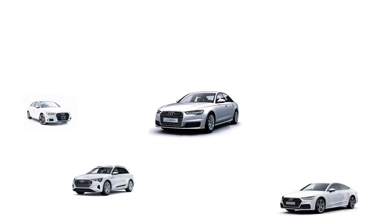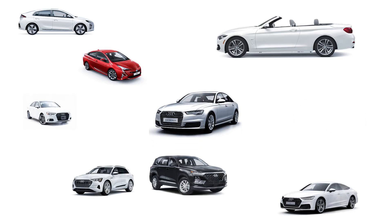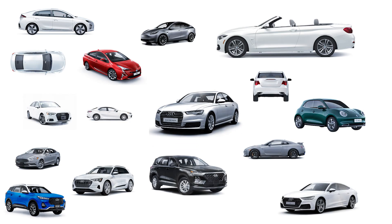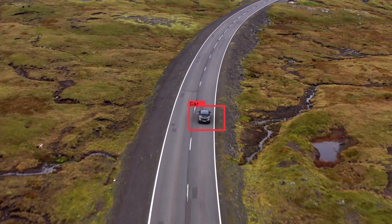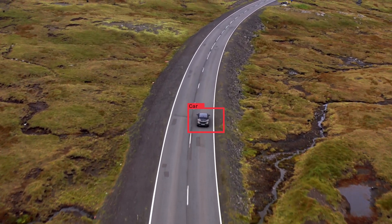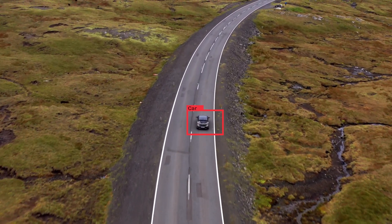Deep learning computer vision models are fed large amounts of image data to teach them what a particular object looks like. The models can then learn to identify those objects in new scenarios.